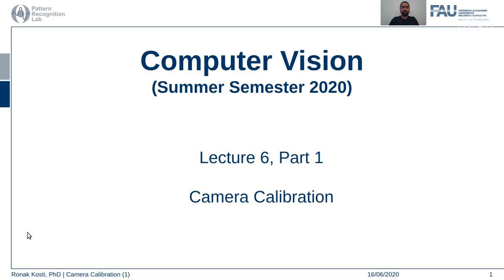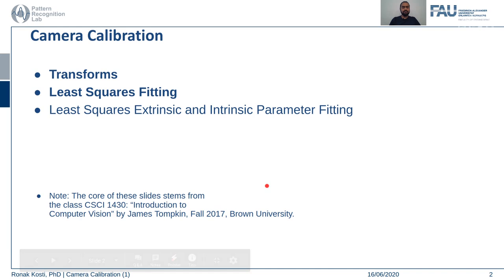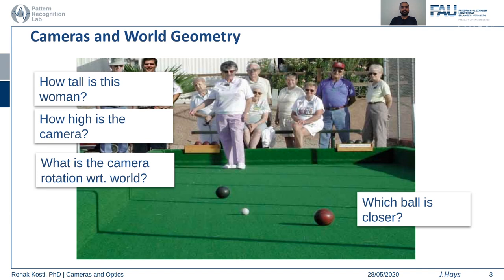Hello everyone and welcome back to the computer vision lecture series. This is lecture six, part one. In this lecture we are going to talk about various camera calibration techniques. We'll begin by seeing what transforms mean, what kinds of transforms are possible and their associated degrees of freedom, and then we'll see how we can model real-world coordinates to camera coordinates.